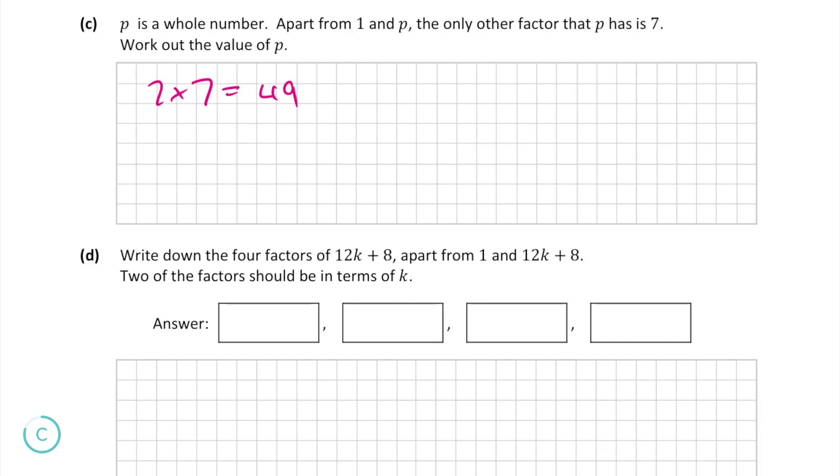If you want you can check yourself that the only factors of 49 are 7, 1, and 49.